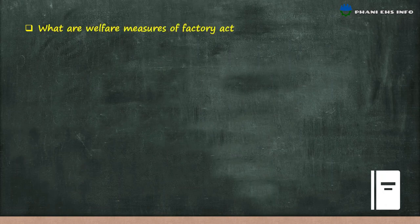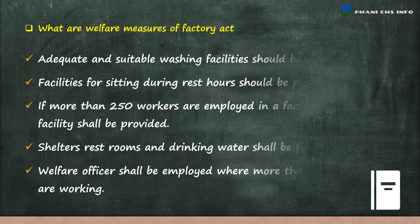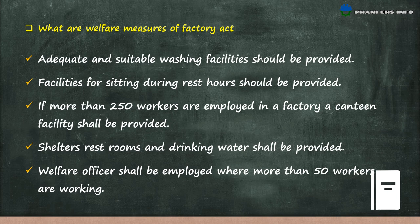What are the welfare measures of the Factories Act? A canteen facility shall be provided. Shelter, restrooms and drinking water shall be provided. Welfare officers shall be employed where more than 500 workers are working.